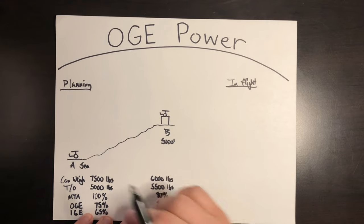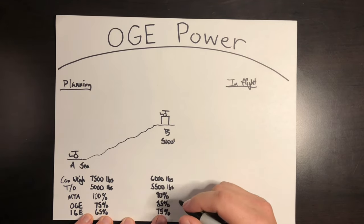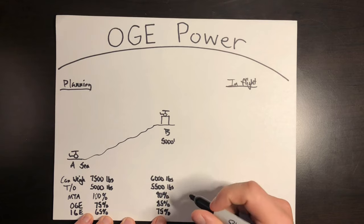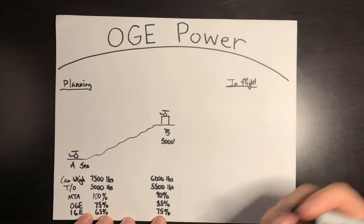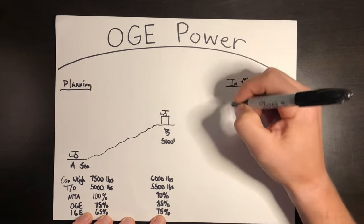So that's how you pre-plan the power. What if you're flying right at the edge of OGE power and you just need a little bit more lift to get out of an area? Let's say OGE power is 90% max torque available is 90%. Well, here's a few techniques that I can do to kind of get a little bit more performance out of it.